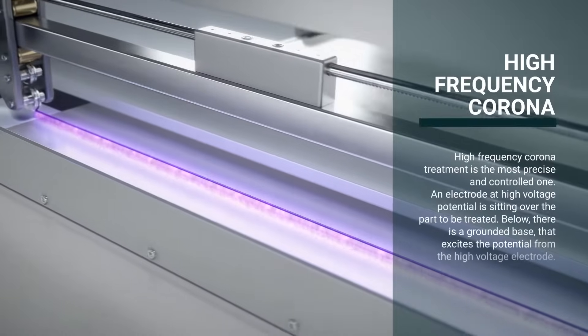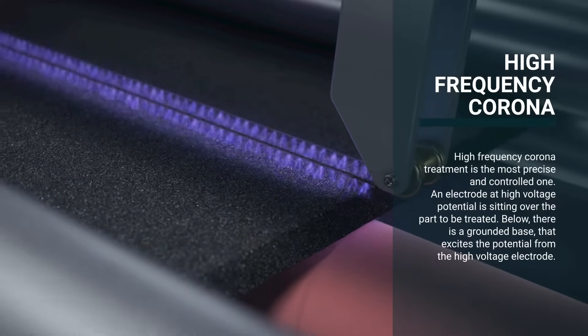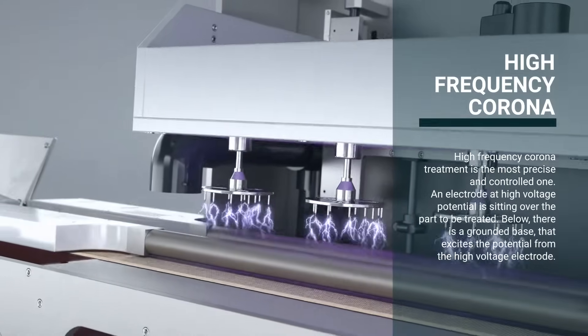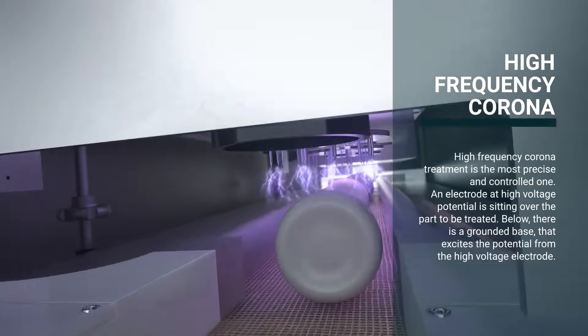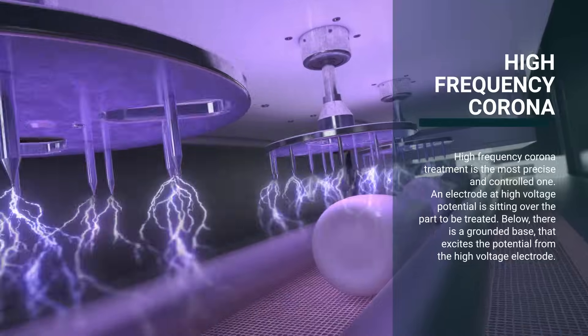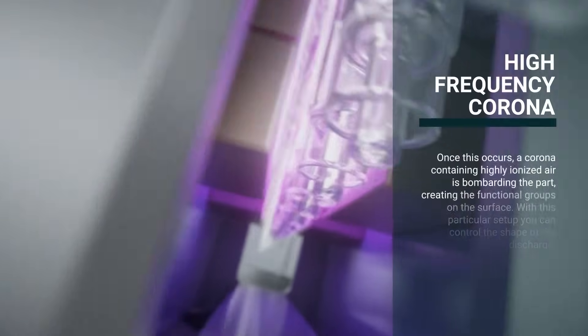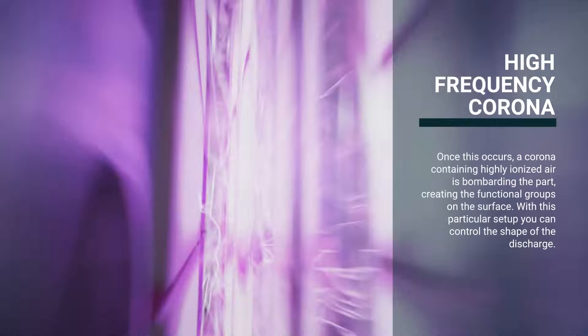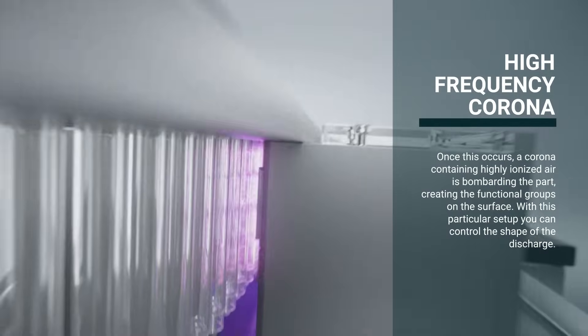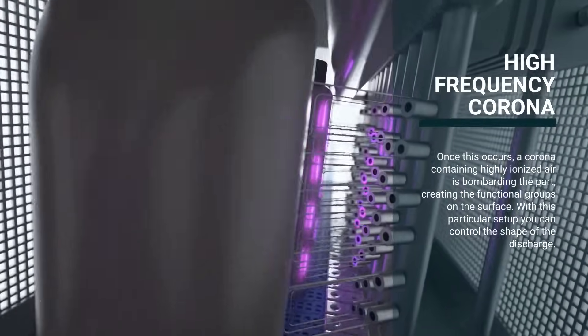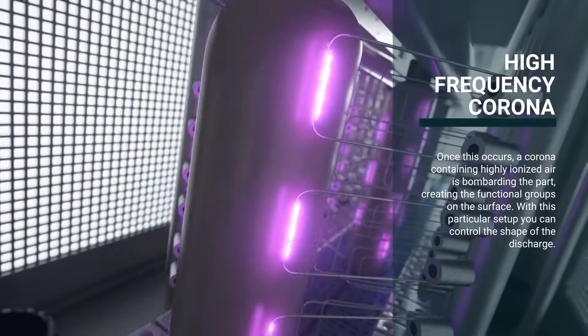High-frequency corona treatment is the most precise and controlled one. An electrode at high-voltage potential is sitting over the part to be treated. Below, there is a grounded base that excites the potential from the high-voltage electrode. Once this occurs, a corona containing highly ionized air is bombarding the part, creating the functional groups on the surface. With this particular setup, you can control the shape of the discharge.